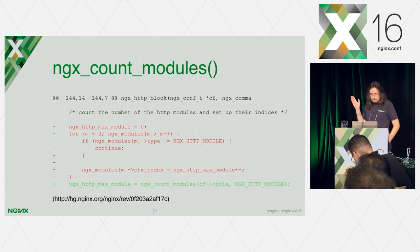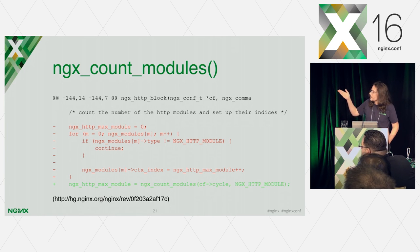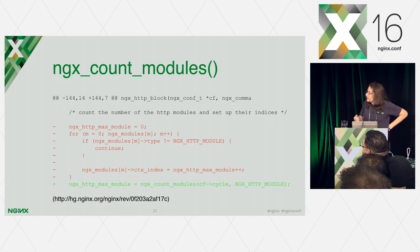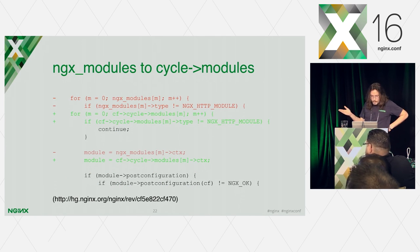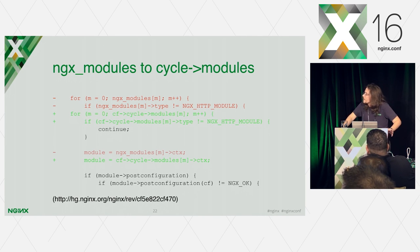Let's start with the complex cases. Here is an example from Nginx itself showing how to use count_modules — it basically replaces a loop in the code with a function call. And how to replace NGX_modules with cycle_modules? Again, we just replace the global references with cycle_modules.